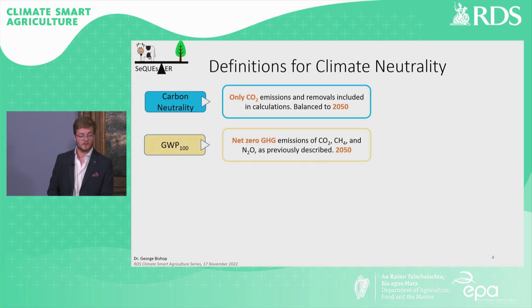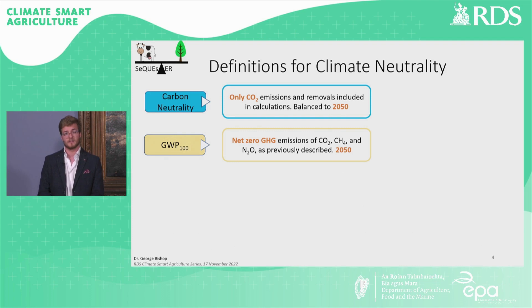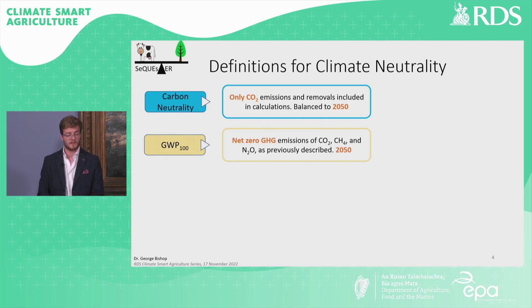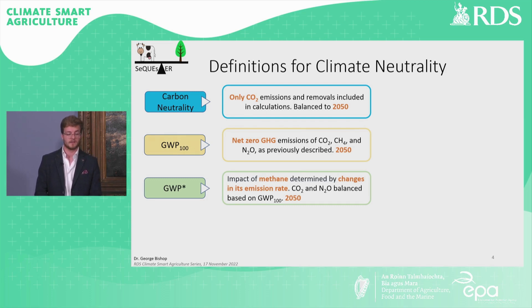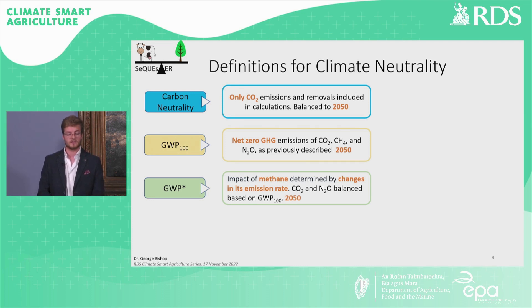The next definition explores net zero greenhouse gas emissions and removals of carbon dioxide, methane and nitrous oxide to 2050, and this is the metric currently used for reporting GWP100. GWP* considers the short lifetime of methane in the atmosphere, where the impact of methane is predominantly determined by changes in its emission rates. The methane impacts are calculated using the GWP* equations, where the long-lived carbon dioxide and nitrous oxide are balanced based on GWP100 to 2050.